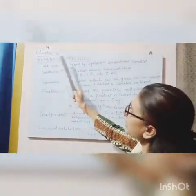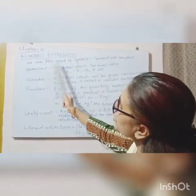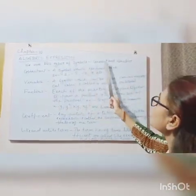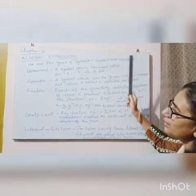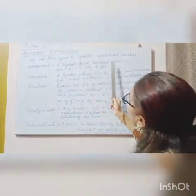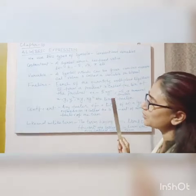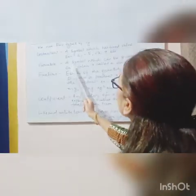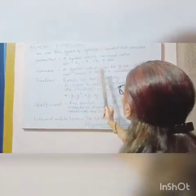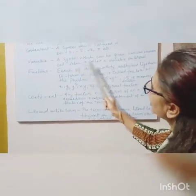At the amount of CP we use two types of symbols: constant and variable. Constant: a symbol which has fixed value is called constant. Variable: a symbol which can be given various numerical values is called a variable or literal.